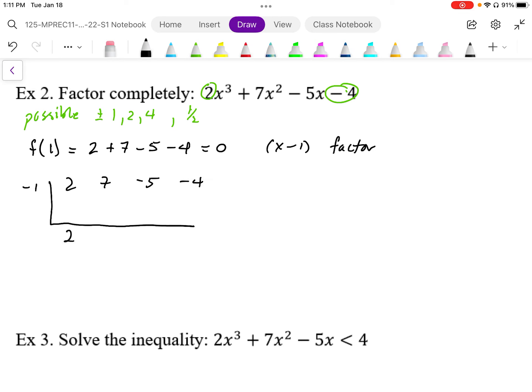Negative 1 times 2 is negative 2. Subtract. Negative 1 times 9 is negative 9. Subtract, we get positive 4.